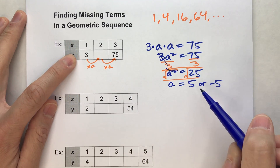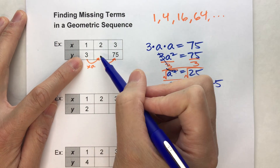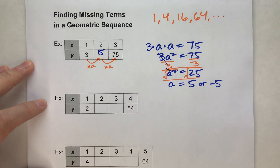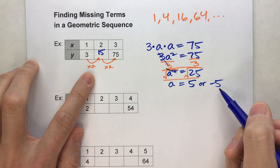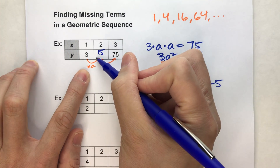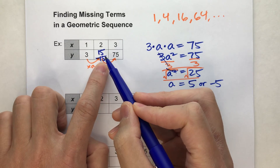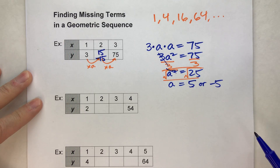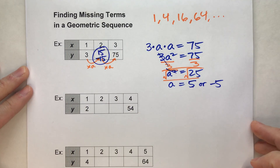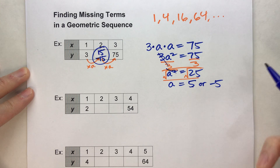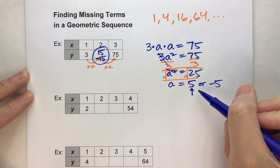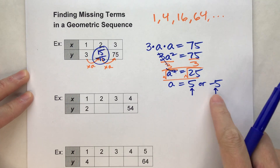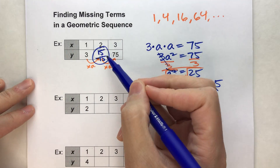Let's see if that works. If it's 5: 3 times 5 is 15, and 15 times 5 is 75 — that works! If it's negative 5: 3 times negative 5 is negative 15, and negative 15 times negative 5 becomes positive 75 — that works too! So there are two possible numbers that could work in this sequence, depending on which common ratio was used, and we don't know which one, so we have to give both.